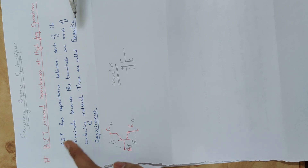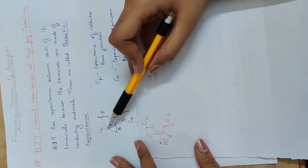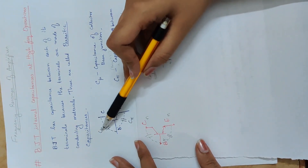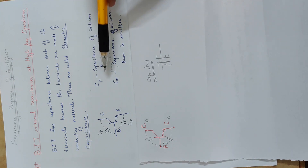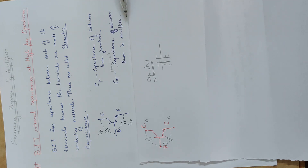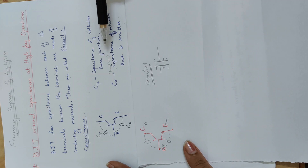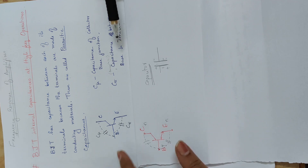These are called parasitic capacitances. The capacitance of the collector-base junction is called Cμ. Cπ is the parasitic capacitance between the base and emitter junction. So Cμ is the collector-base junction capacitance, and Cπ is the base-emitter junction capacitance.